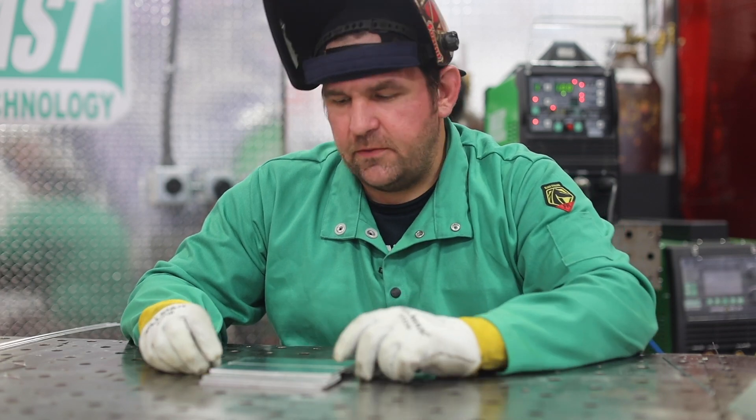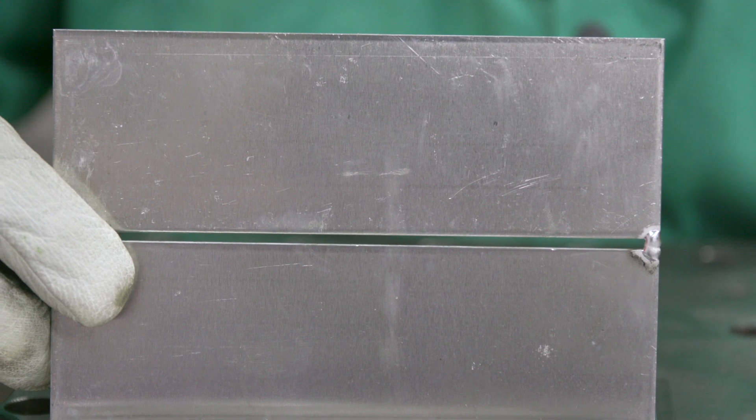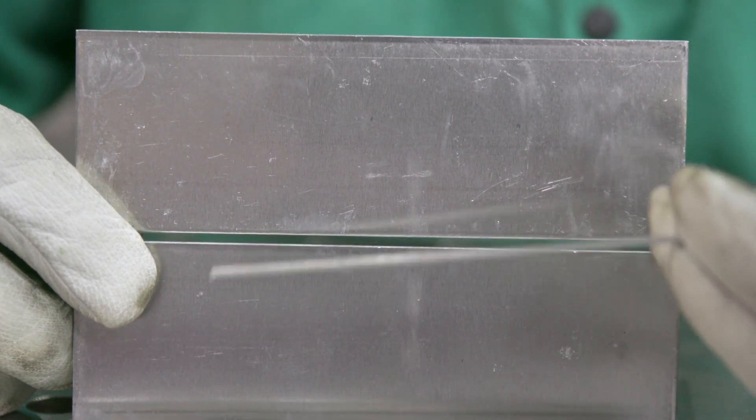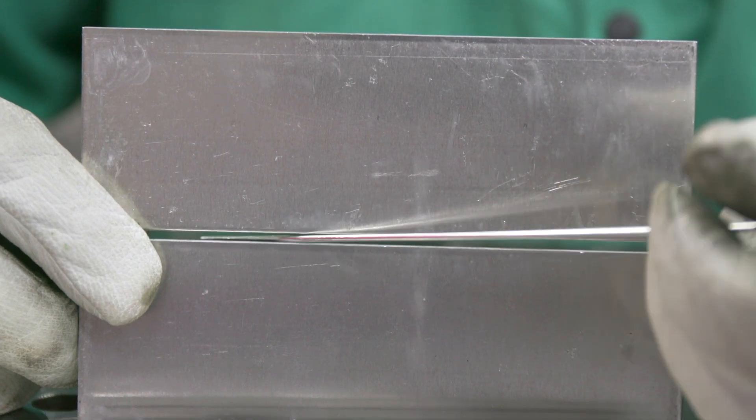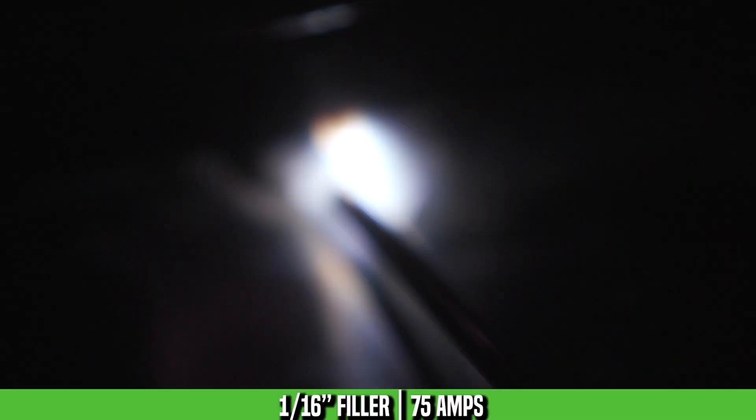Now we're back with our second bad fit-up that I normally see. So what we have here is some 090 plate with a large gap. Now, normally on 090, I'll set the machine to 100 amps and I'll use 1/16th filler with a good fit-up. So I'm going to start by doing that. We'll see how it goes. Then we'll show you how to run a better weld later. So here we go.